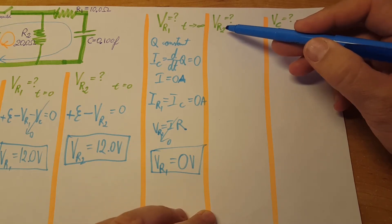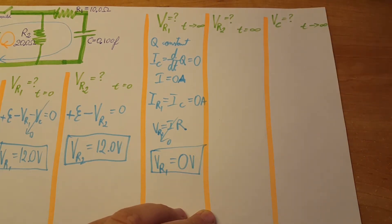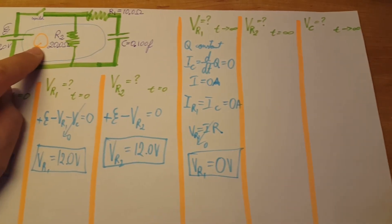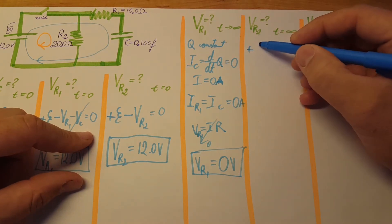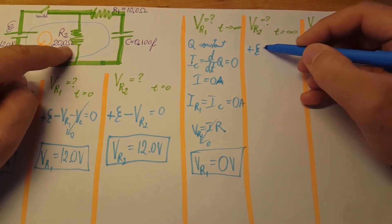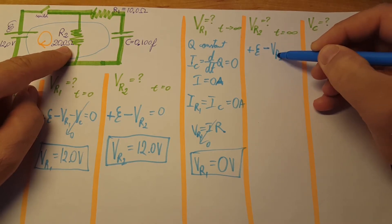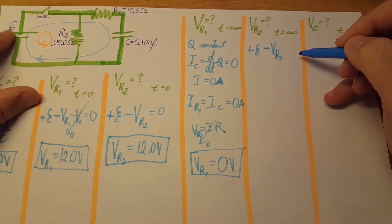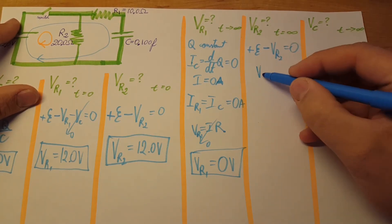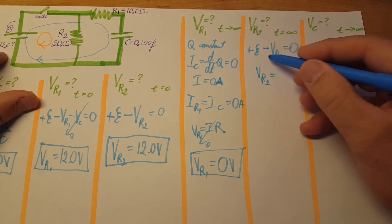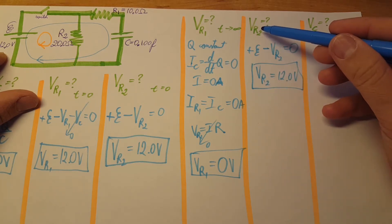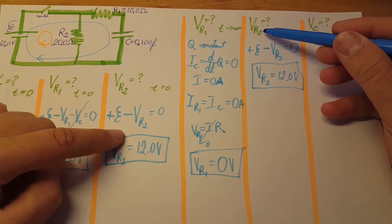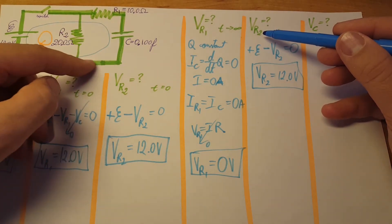Part E: voltage on resistor 2 after a long period of time. Using the left loop again going clockwise: positive EMF minus the voltage drop on R2 equals zero. Therefore the voltage drop on R2 equals EMF, which is 12 volts. As we can see, the voltage drop on R2 is unaffected by what's happening in the branch with R1 and the capacitor.